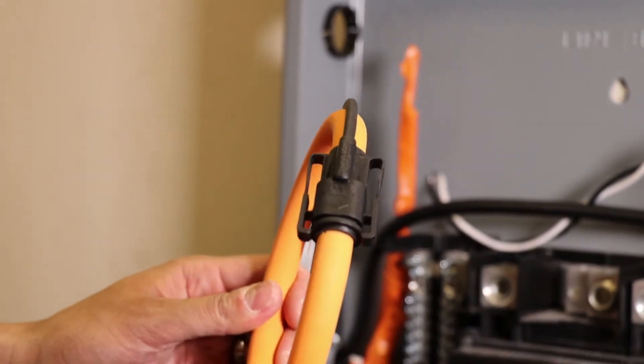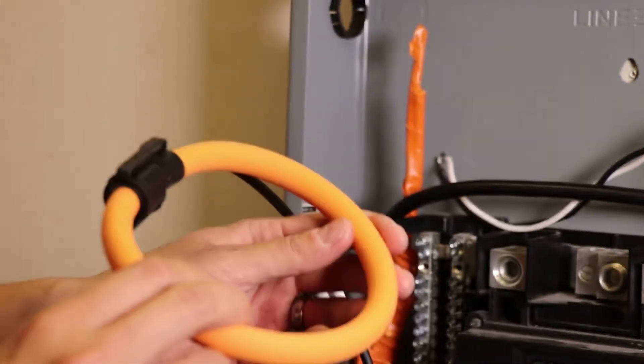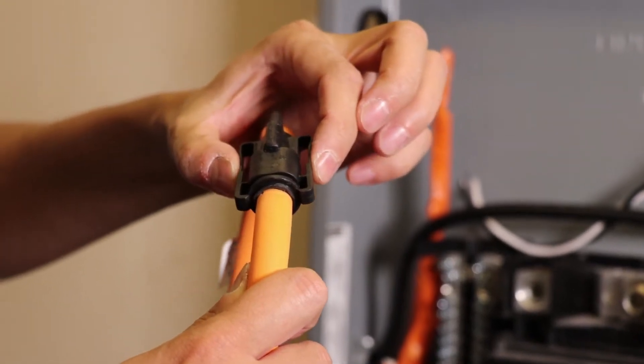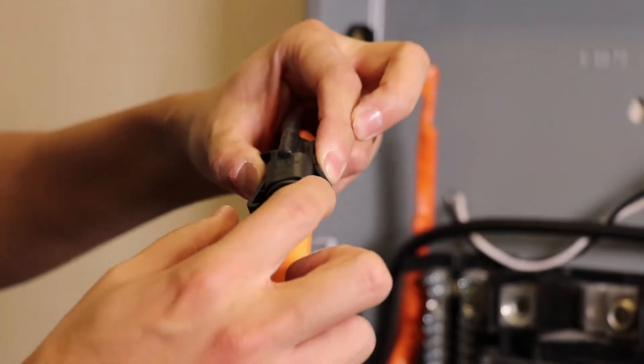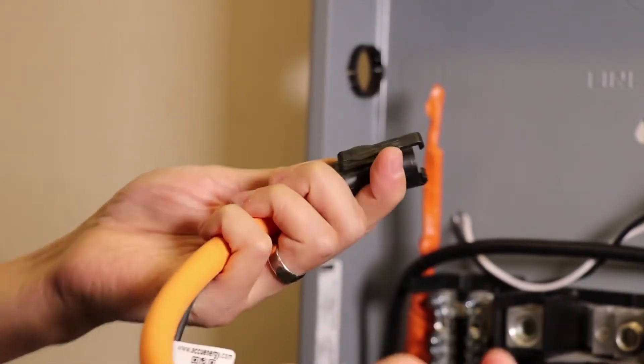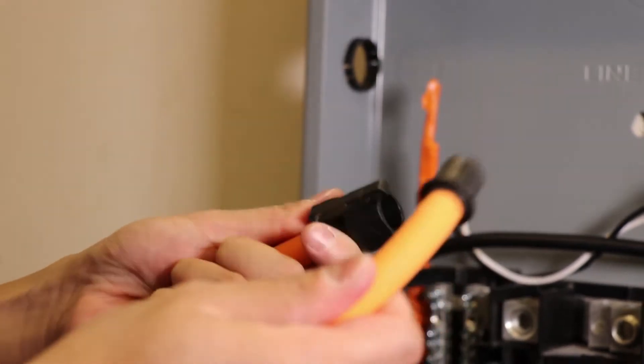Our system is also compatible with an AccuEnergy Rogowski coil. The coil opens by pushing these two tabs in to unlock this clasp and the coil opens this way. Many people prefer this because it's flexible and can fit in tight spaces.